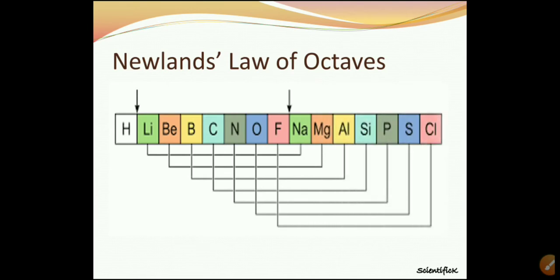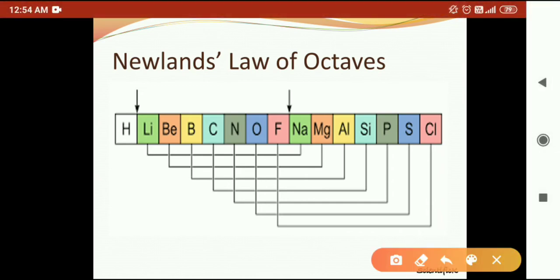Here you can see some elements from Newland's periodic table. First is hydrogen, next is lithium, beryllium, boron, carbon, nitrogen, oxygen, fluorine, sodium, magnesium, aluminium, silicon, phosphorus, sulfur, and last is chlorine. So first and eighth element's properties were similar. If we take lithium as element number one, then beryllium, boron, carbon, nitrogen, oxygen, fluorine, and sodium will be eight.